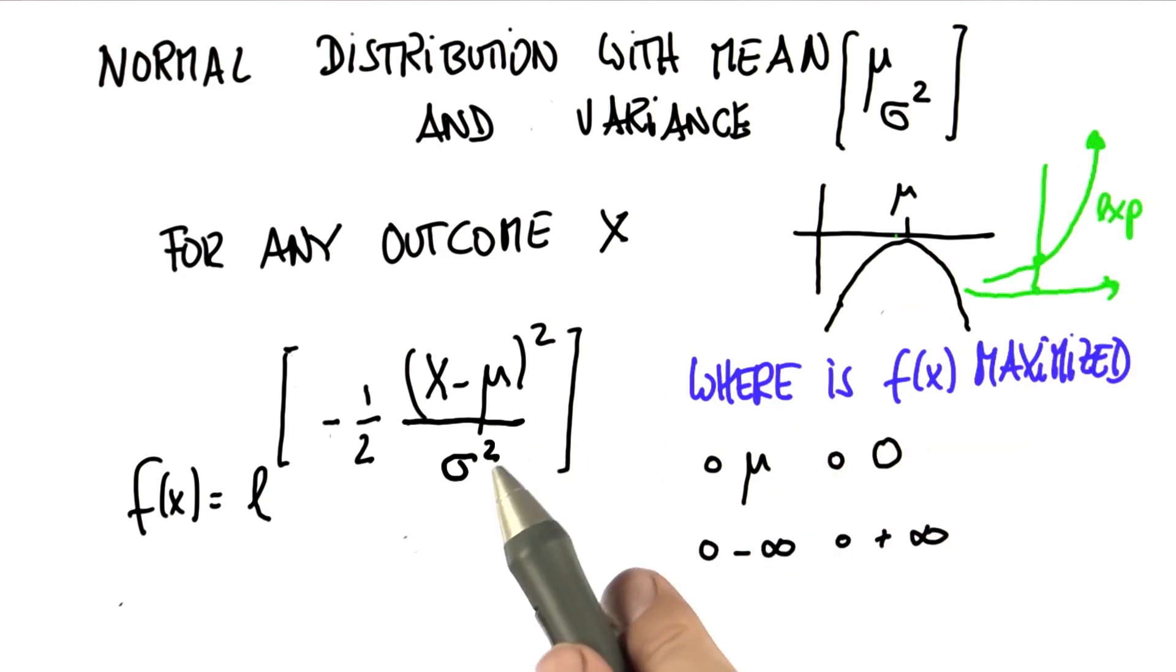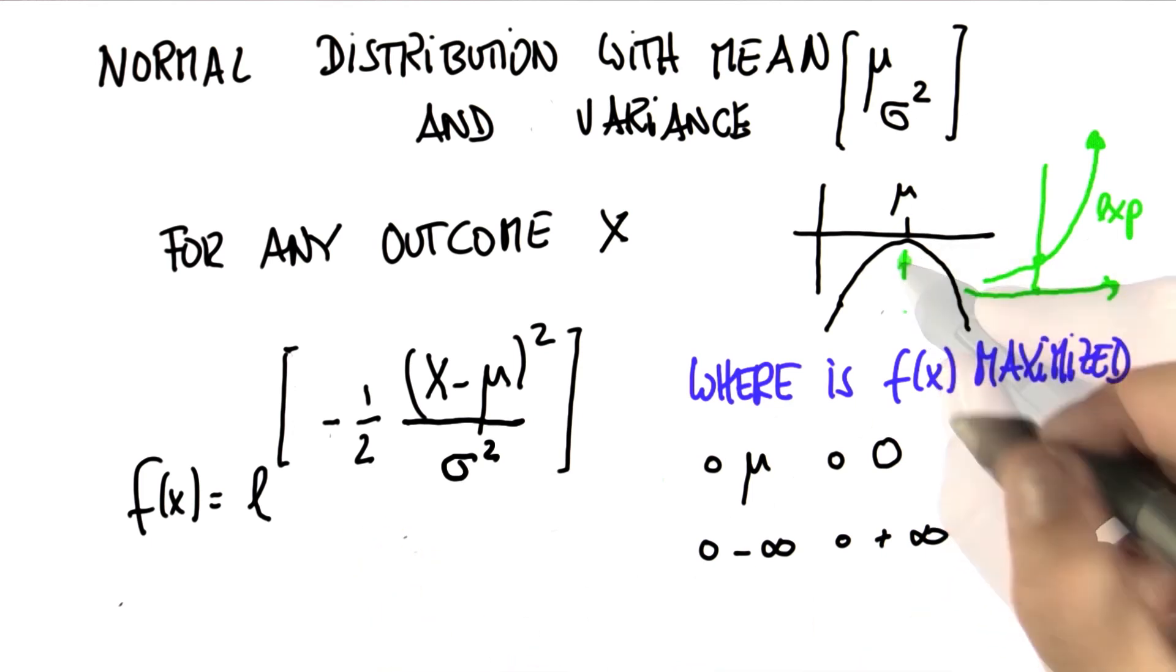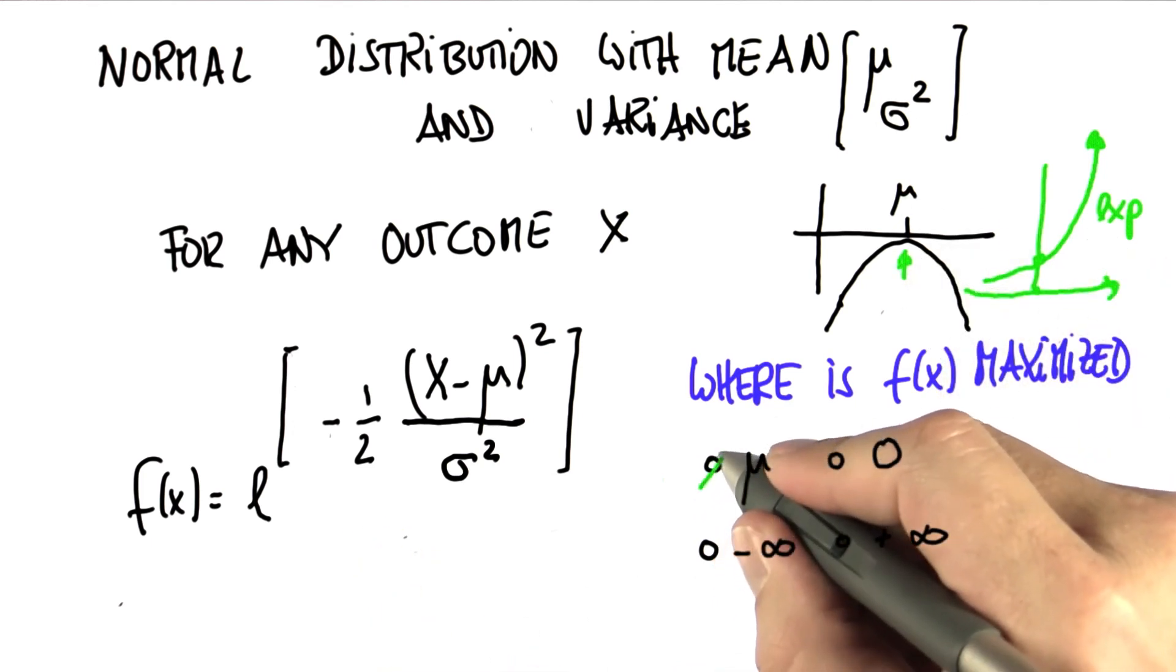It ought to be optimized where this thing over here is the largest. And where is that the case? Well, it's exactly where mu hits 0.